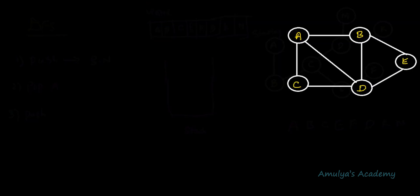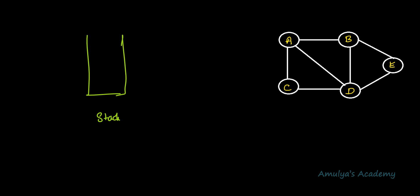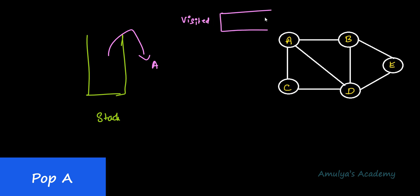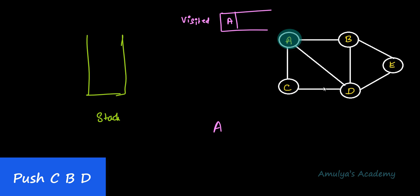Let's take another example. Here we have another graph. I'll take A as the starting node. First step: push the starting node A onto the stack. After push, perform pop — pop A. Check whether A is already visited; the visited list is initially empty, so A is not visited. Mark A as visited. Now push all unvisited adjacent nodes of A — C, B, and D are adjacent to A and all are unvisited, so we push C, B, D.